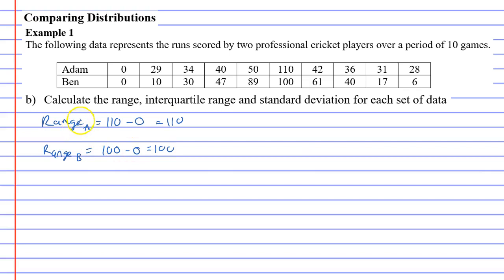Now when we do this we notice that Adam has a bigger range and that could imply that Adam's data is more spread out. Large numbers mean spread out, small numbers means data is grouped together. Problem being that range is not always a great measure of spread. So let's check interquartile range and standard deviation and see if they come up with similar results.